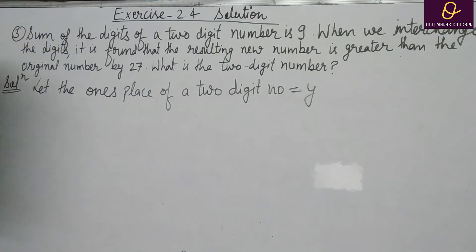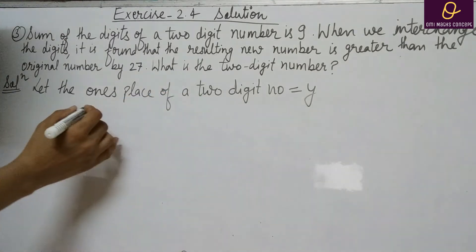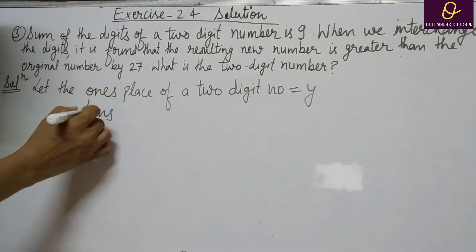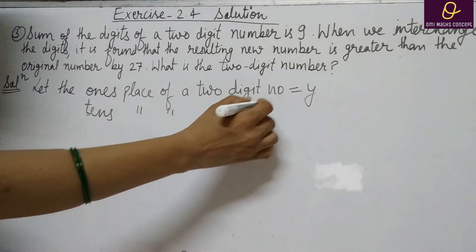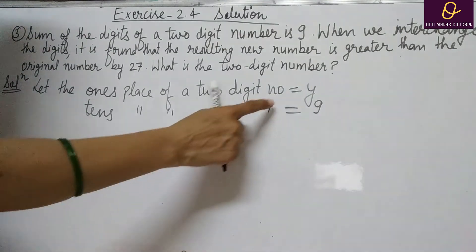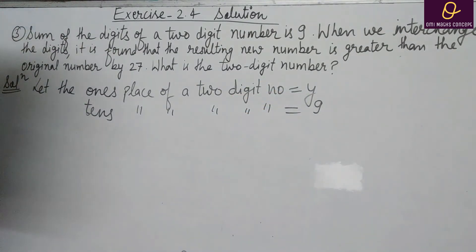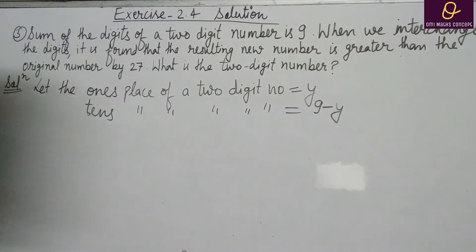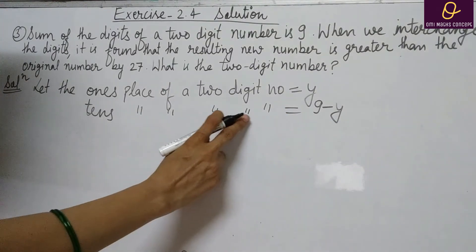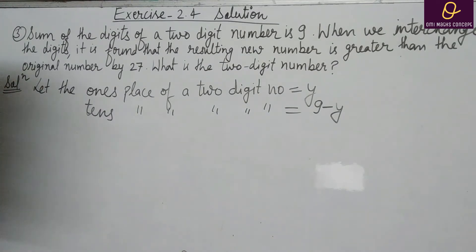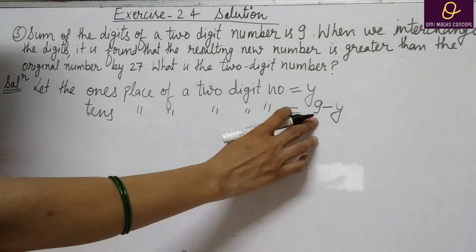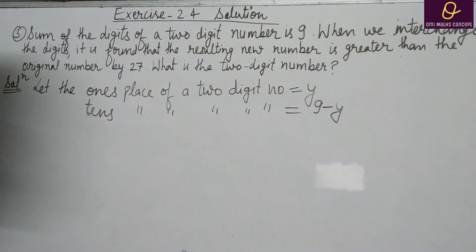जो one's place है वो y है. Two-digit है जिनका sum कितना है? 9. तो जब आप दूसरी digit find out करोगे — जो 10th place होगा — सम आपके पास 9 है. 9 में से अगर आप one's place को minus कर देते हैं, तो आपके पास 10th place आ जाएगा — so 9 minus y. यह आपके पास 10th place digit होगी.